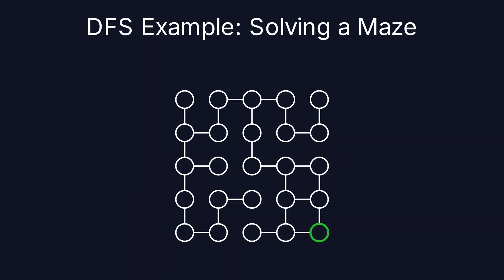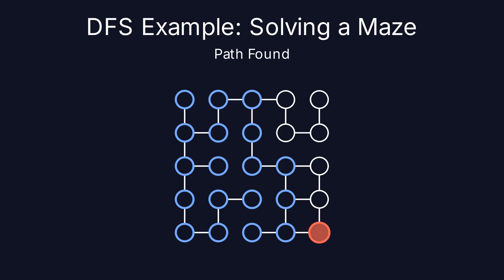Here's an example of how DFS can be used to solve a maze. Starting from a point, DFS explores each possible path, diving deep into one direction until it either finds the solution or hits a dead end, in which case it backtracks. In this maze, DFS traces out a path by moving forward and then backtracking when necessary until it finds the solution, as shown by the red path. This approach ensures that no potential solution is left unexplored.